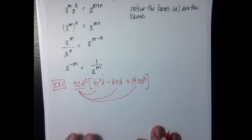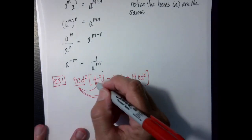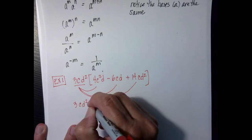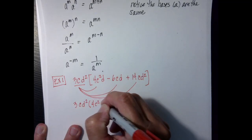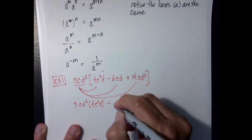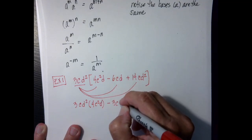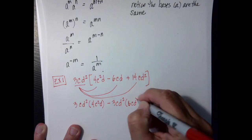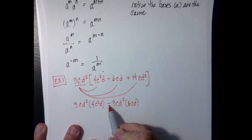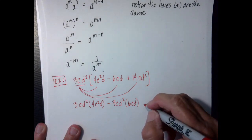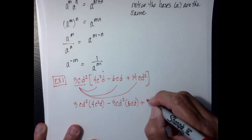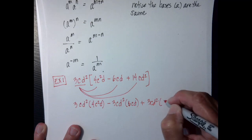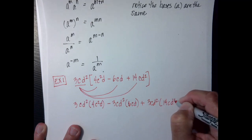For the short term, I'm just going to start writing it all out. So I'm going to have 3cd squared times 4c²d, and then I'm going to have minus 3cd squared times 6cd — notice that I moved the negative out front because I think it's just a little bit easier to keep track of it — and then I'm going to have 3cd squared times 14cd squared.